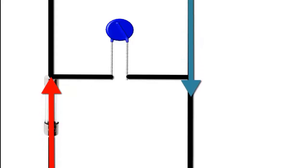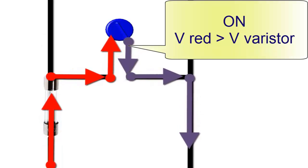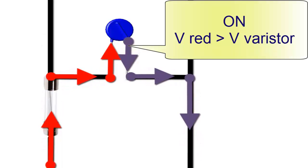However, each time the varistor comes into action, it is subjected to high current, which can result in deterioration after several activations.